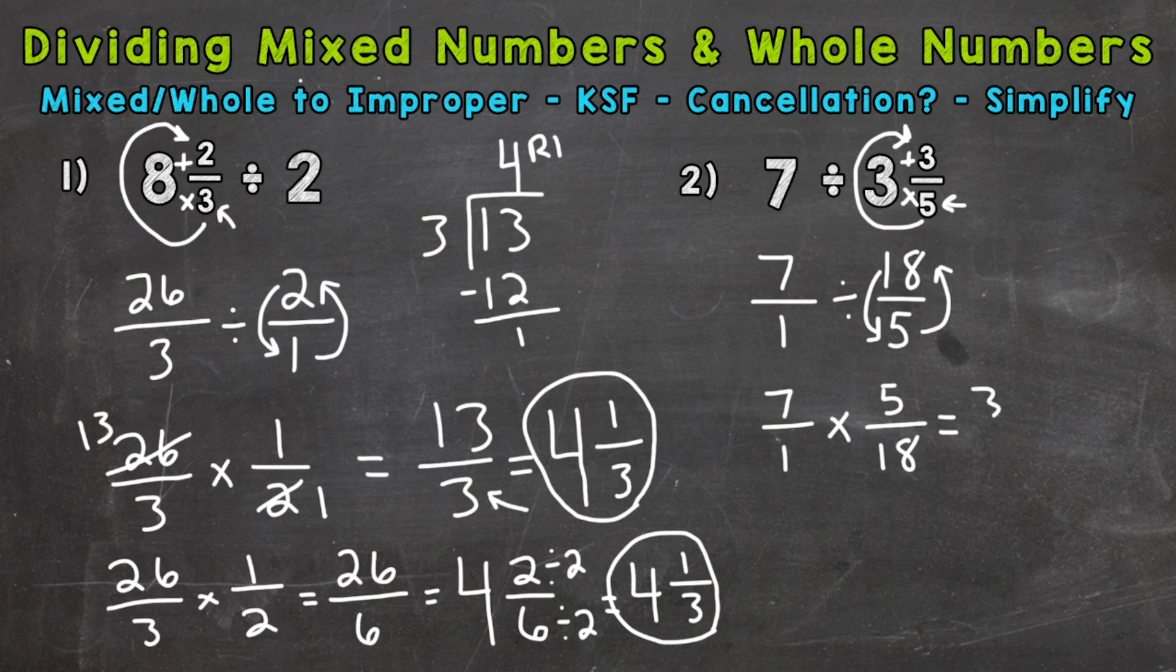7 times 5 is 35. 1 times 18 is 18. So our answer is 35 over 18. But we do not want to leave it improper. Let's change it to a mixed number. So we need to do 35 divided by 18. How many whole groups of 18? Well, 18 times 2 is 36. So we don't quite have enough for 2. It's going to be one whole group of 18. And that's going to give us a remainder of 17. Keep our denominator of 18 the same. The only common factor between 17 and 18 is 1. So that is in simplest form. And we are done. Our final answer is 1 and 17 over 18.